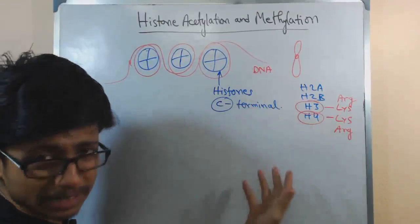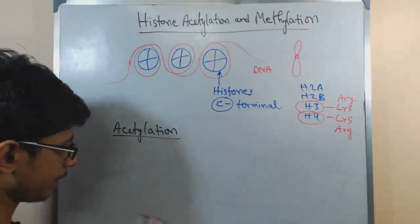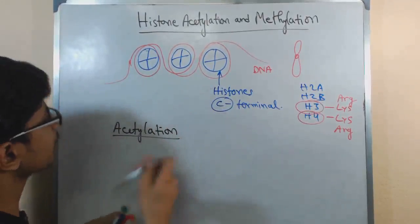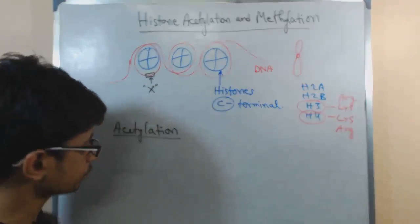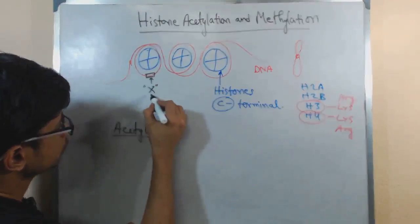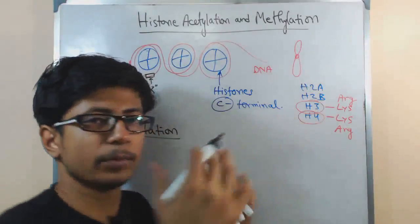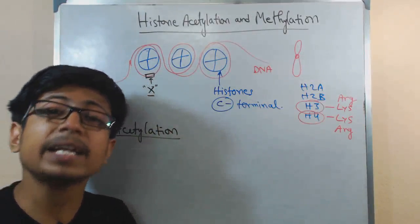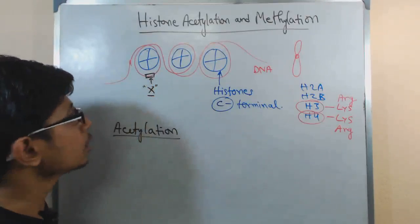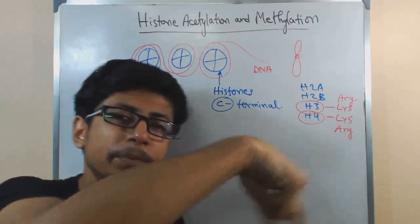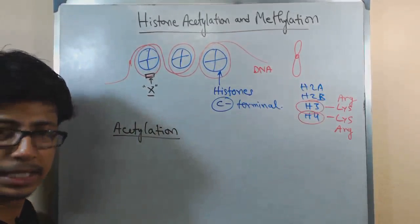Now let's talk about the functionality of acetylation. Let's say we have a gene X present somewhere in the nucleosome that we want expressed into mRNA and then translated into protein. This gene X is folded inside the nucleosome, so RNA polymerase — the enzyme that transcribes the gene — will not be able to bind and transcribe it. So we need to unwrap the DNA from the histone, and that is what histone acetylation does: it helps in unwrapping the DNA from the histone.